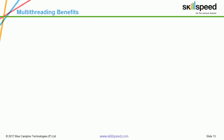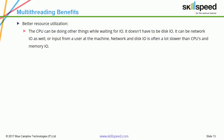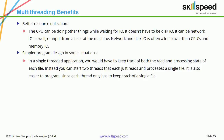Let us now look at the benefits of multi-threading. First, better resource utilization: the CPU can be doing other things while waiting for I/O — it doesn't have to be disk I/O; it can be network I/O or input from a user. Network and disk I/O is often a lot slower than CPU and memory I/O. Second, simpler program design in some situations: in a single-threaded application, you would have to keep track of both the read and processing state of each file. Instead, you can start two threads that each just reads and processes a single file, making it easier since each thread only has to keep track of a single file.